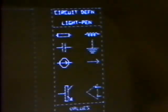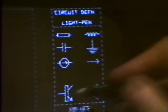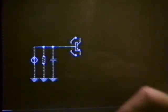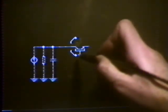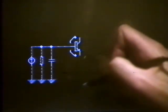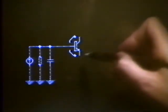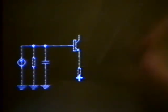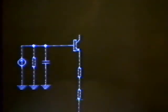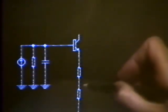That feeds into a transistor whose orientation can be altered by means of these arrows. But in fact, we want it in the common emitter connection. And when we continue drawing, the arrows disappear. We need a resistor, followed by another resistor down to earth.